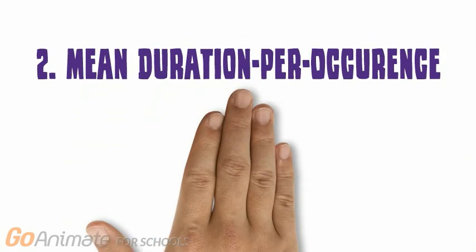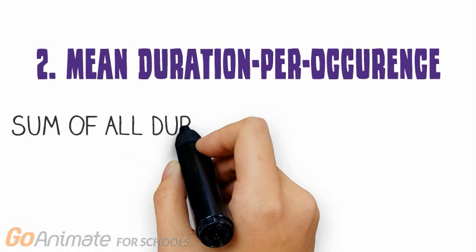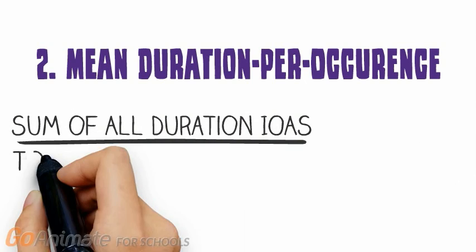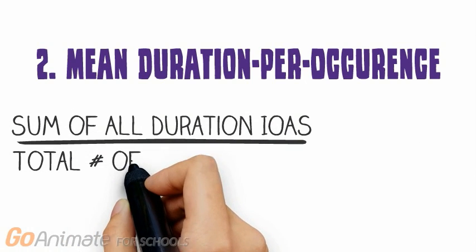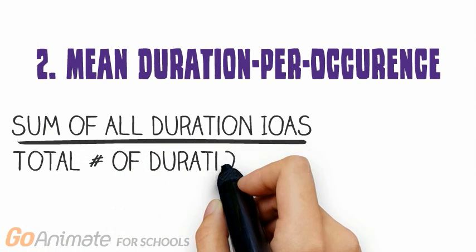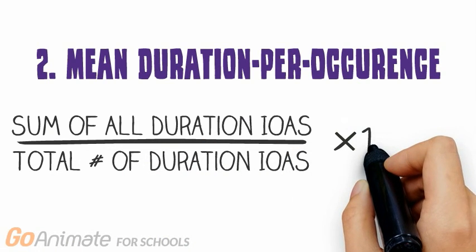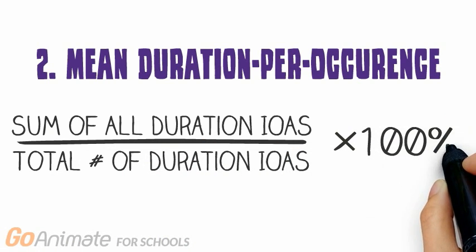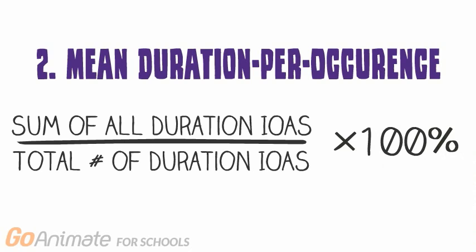For Mean Duration per Occurrence IOA, we determine an IOA score for each timing and divide by the total number of timings in which both observers collected data. This is a more conservative approach and increases the likelihood that agreement scores reflect observations of the same instance of the response.